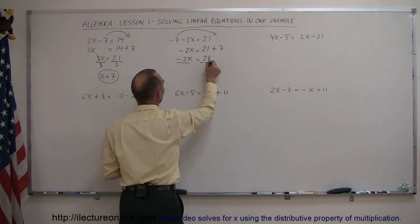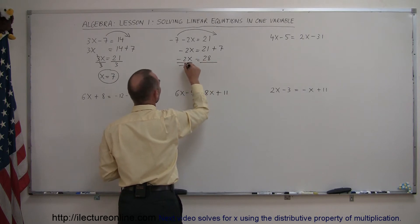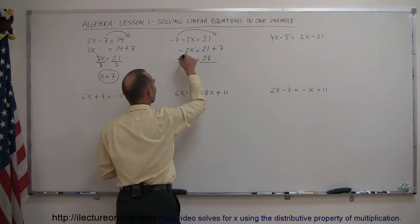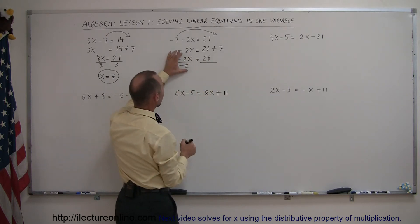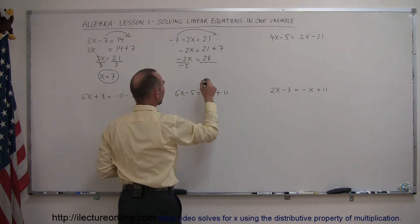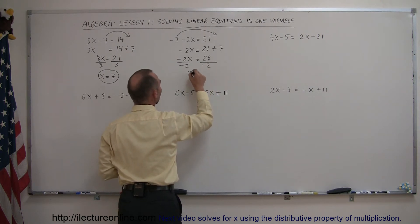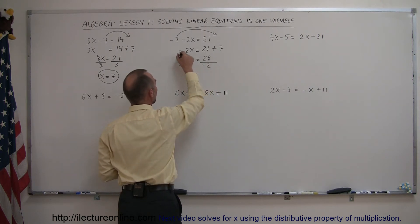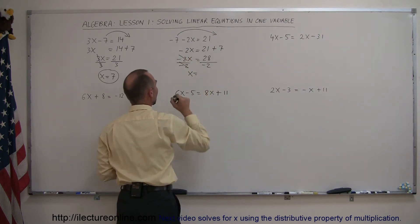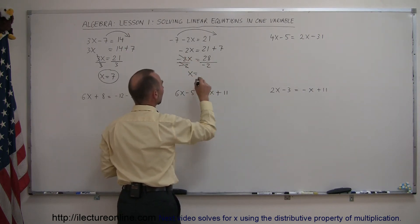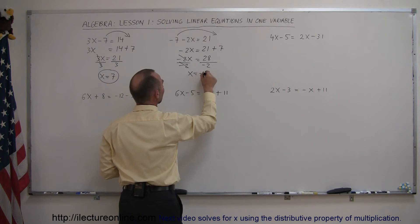The last step is to divide both sides by the numerical coefficient, the number in front of the variable. We do that on both sides, so negative 2 cancels out and we have X equals negative 14.